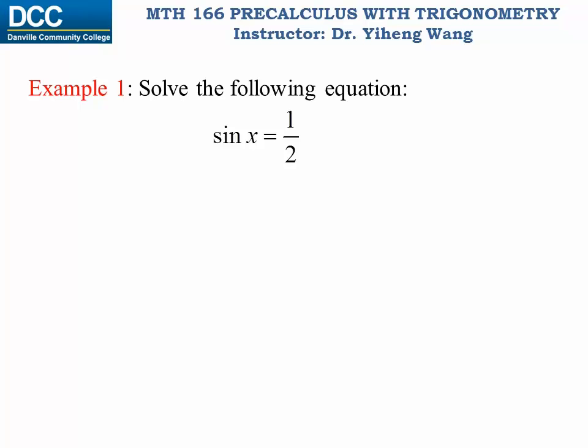Let's look at a very simple example. We need to solve this equation for x, that sine x equals to one-half. Now based on your current knowledge of trigonometry, you can probably easily tell that sine of pi over six equals to one-half, therefore x equals to pi over six. That is correct, however is that the only solution to this equation?